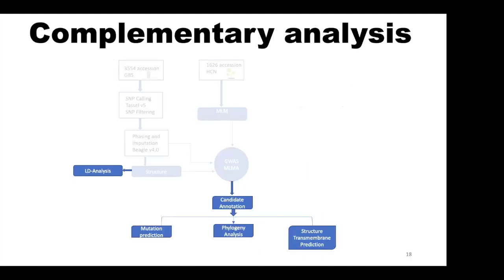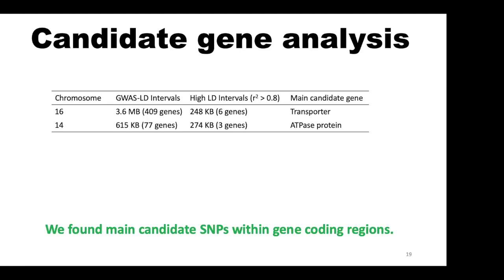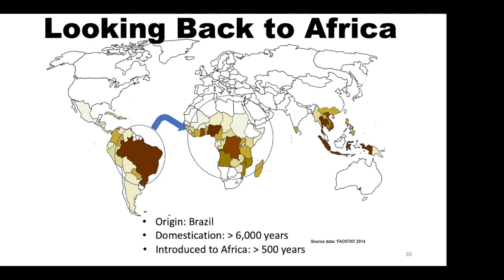We performed complementary analyses to map the gene responsible for the variation. In the high LD interval for chromosome 16, we identified six genes; for chromosome 14, three genes. Our candidate gene based on optimal p-value and mutation prediction is a transporter on chromosome 16 and an ATPase protein on chromosome 14. The candidate SNPs are found within the coding regions of those candidate genes. Although we described the situation in Africa, we started with Brazilian data because cassava originated from and was domesticated in Brazil. It was transferred to Africa, but additional improvement changed the genome landscape.